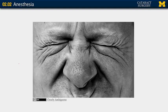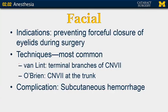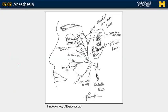Despite all these different types of anesthetics, a problem you may encounter is forceful eyelid closure. If this happens, you may want to use a facial nerve block. The most common techniques are the van Lint, which anesthetizes the terminal branches of cranial nerve 7, and O'Brien, which anesthetizes cranial nerve 7 more towards the trunk. One of the complications includes subcutaneous hemorrhage. The van Lint anesthetizes the terminal branches and O'Brien anesthetizes closer to the trunk.